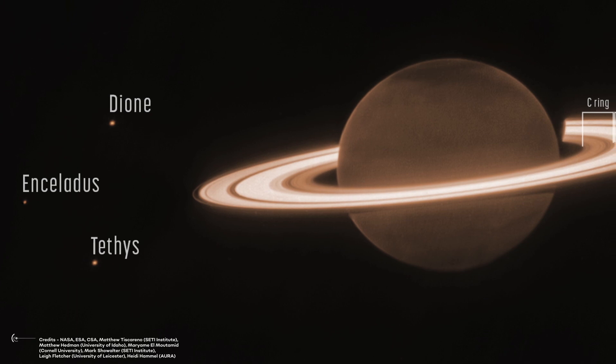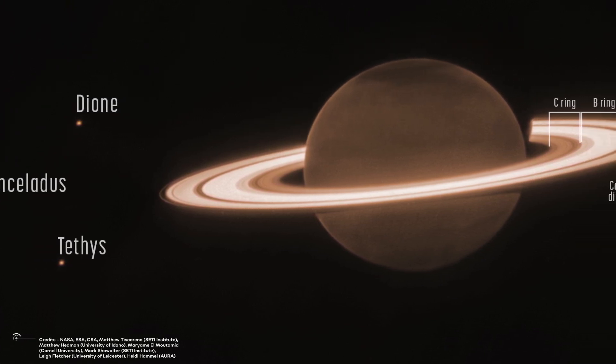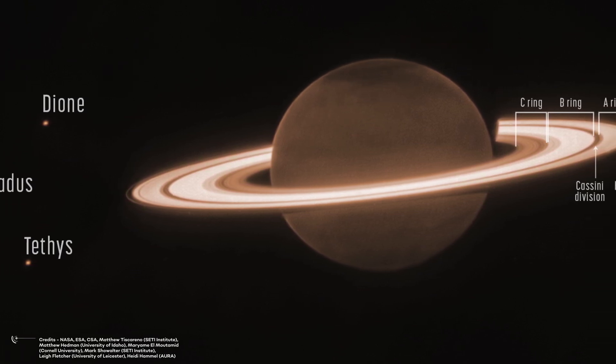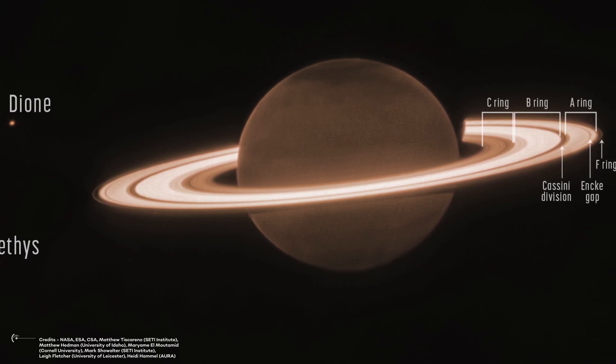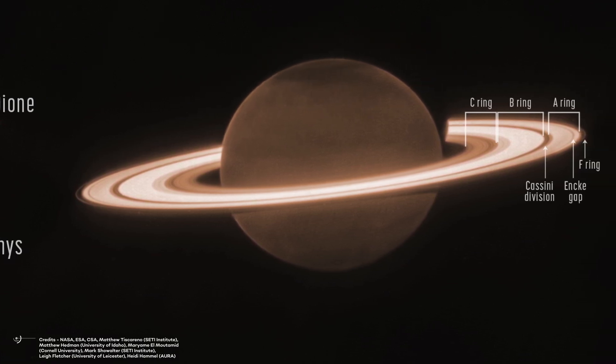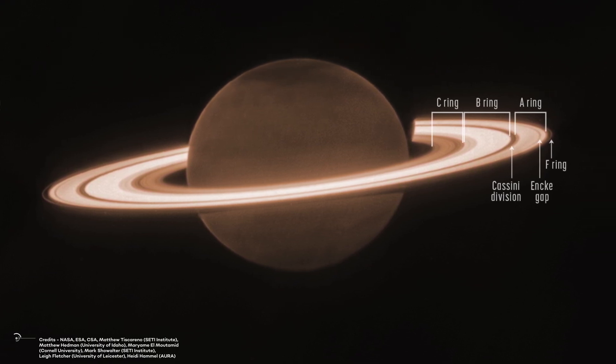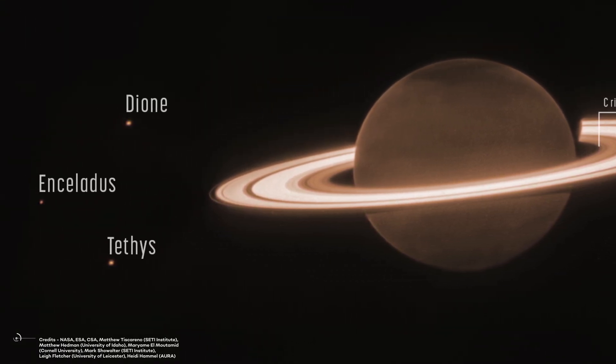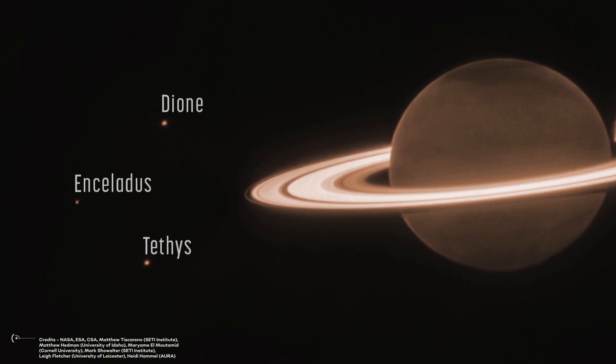For example, Saturn is currently experiencing northern summertime, with the southern hemisphere emerging from the darkness at the end of winter. However, the northern pole is particularly dark, perhaps due to an unknown seasonal process affecting polar aerosols in particular. Saturn is seen surrounded by its famous system of rings, and the level of detail is incredible. On the left side of the image, we can also notice three of its moons, Dione, Enceladus, and Tethys.